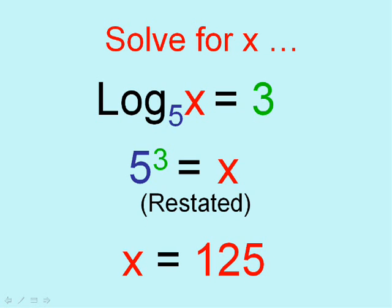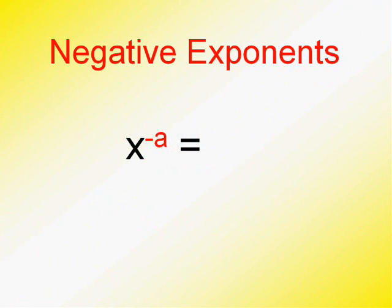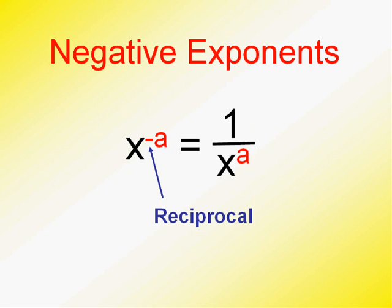Now since these are exponents, we're going to have to remember all the rules of exponents. So remember the rules of negative exponents? x to the negative a equals not just the opposite, but rather the multiplicative opposite, the reciprocal. So x to the negative a equals 1 over x to the a. Remember that.